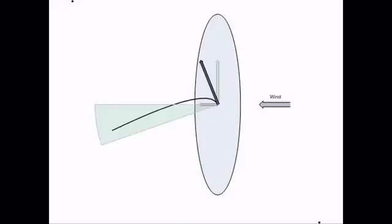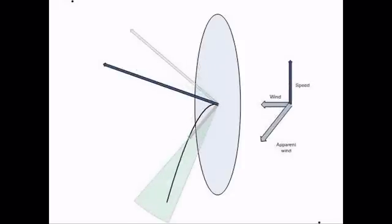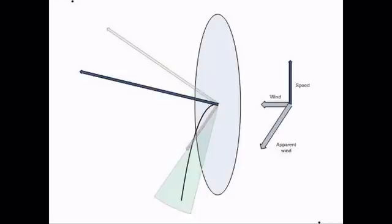When the windsurfer accelerates across the wind, true wind and induced wind combine. The resulting air flow, called apparent wind, comes from a different direction as seen by a windsurfer moving at a speed. This phenomenon, in turn, shifts the green zone.